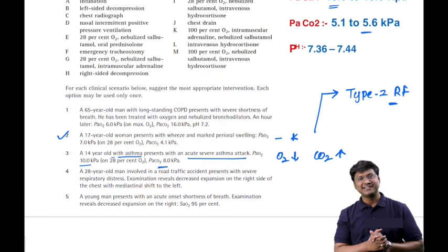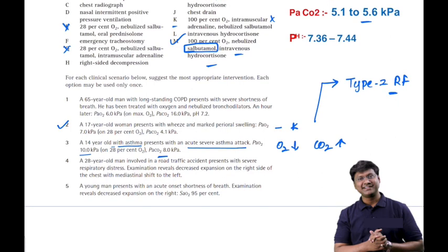The best management for acute severe asthma: give 100% oxygen. The drug of choice in acute asthma attacks is salbutamol, plus intravenous hydrocortisone. Options with 28% oxygen are insufficient. Intramuscular adrenaline is not given in acute asthma attacks. The answer for the third clinical scenario is 100% oxygen, nebulized salbutamol, and intravenous hydrocortisone.